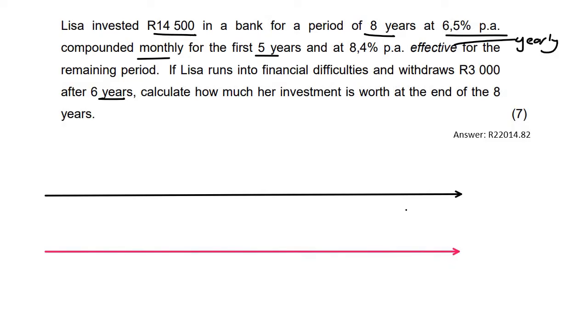So I always do two timelines. I only do two timelines if there is changing interest rates and there's deposits and withdrawals. So my one timeline is for all of the payments and the withdrawals, and then the other timeline is to show me all of the different interest rates.